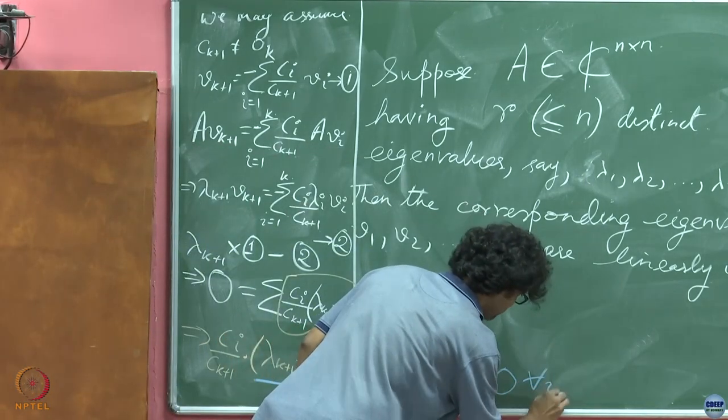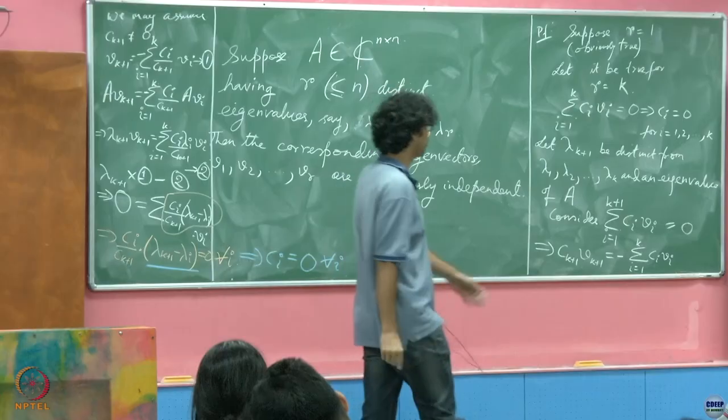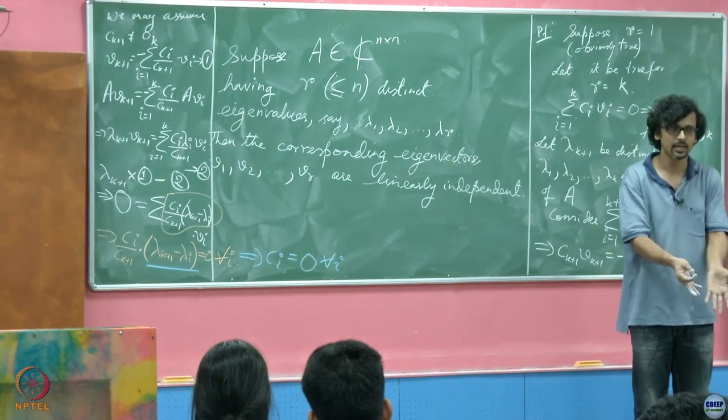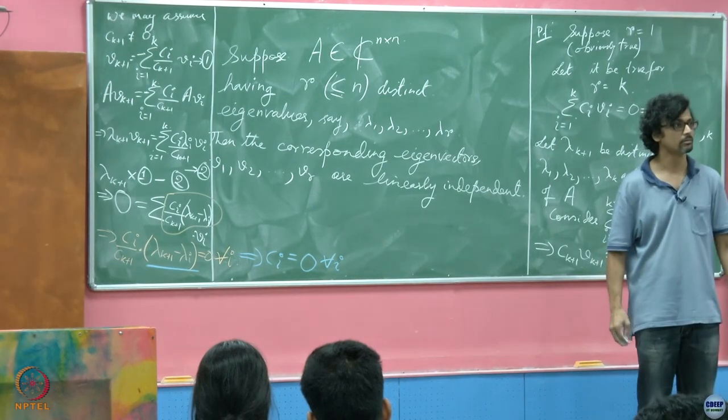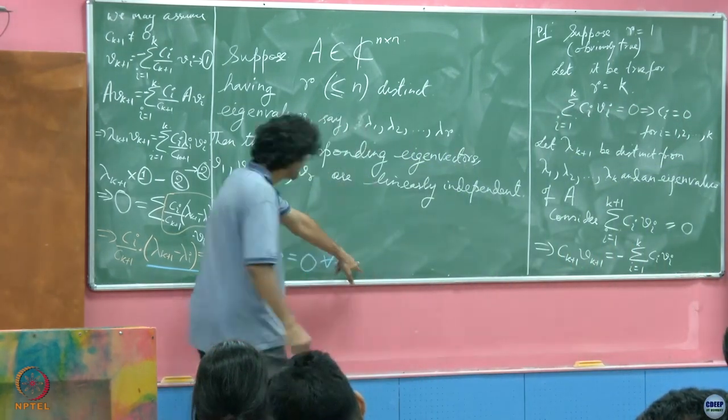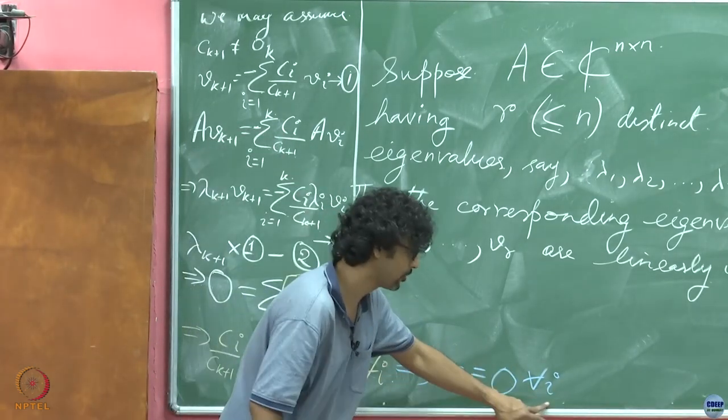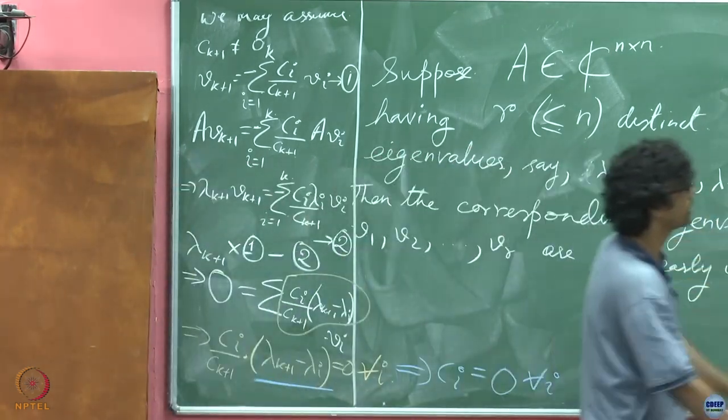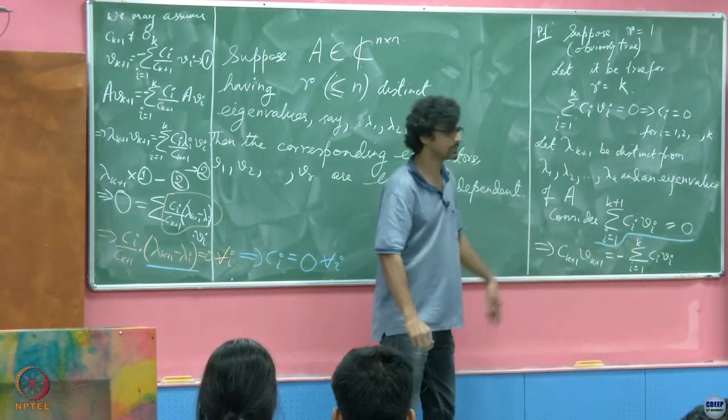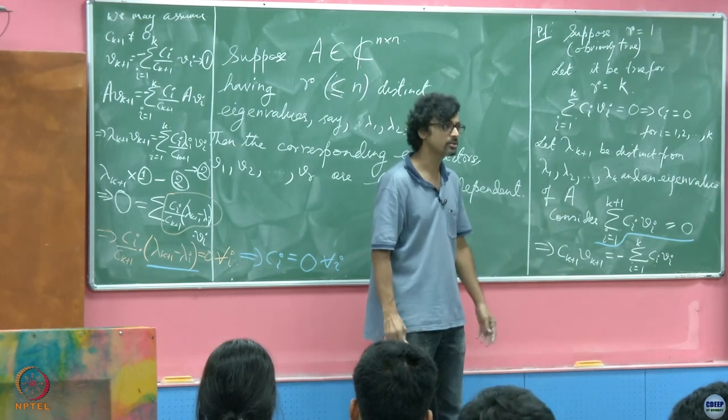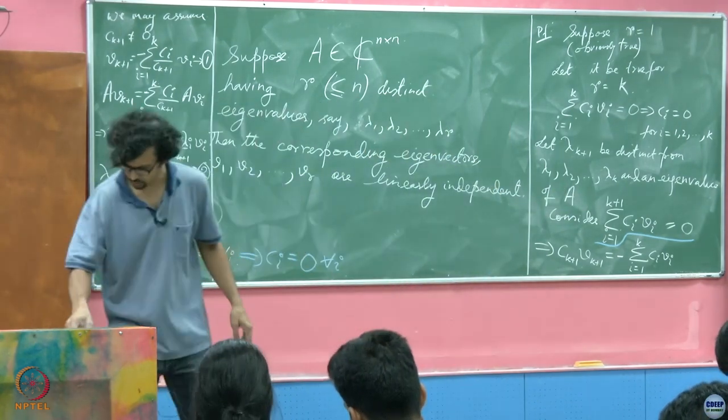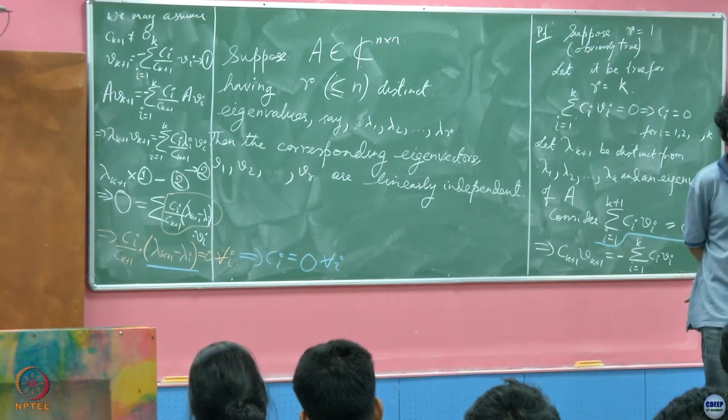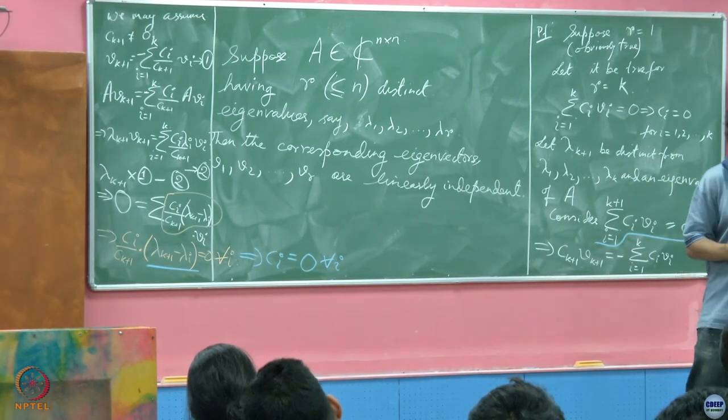For all i. And if ci equals 0 for all i, then ck+1 times vk+1 can equal 0 when vk+1 is not 0 if and only if ck+1 is also 0. So this is for all i including k plus 1. From this very equation, if the first k ci's vanish, then ck+1 must also vanish.